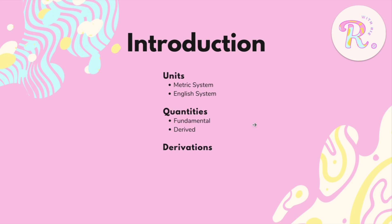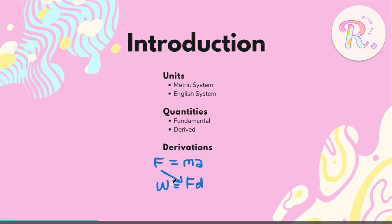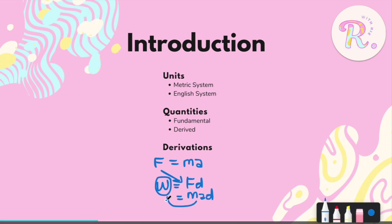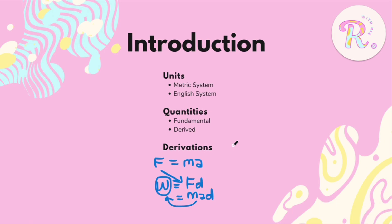We also have derivations — basically just how your derived quantities got there. In physics there are a lot of formulas you need to memorize, so it's better to just embed them in your entire being by mastering derivations. For example, force is mass times acceleration. If you combine force with distance, that gives you work. So the formula for work contains the formula for force in it — you can write it as mass times acceleration times distance. That's what derivations is all about.